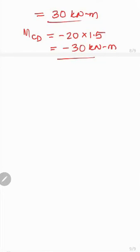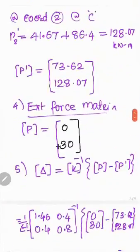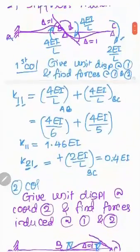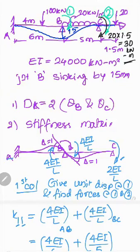These are the final moments. With these final moments you can draw the bending moment diagram and calculate the shear forces to draw the shear force diagram. This problem demonstrates how to account for sinking of a support and an overhang when analyzing a continuous beam by the stiffness method using the system approach.